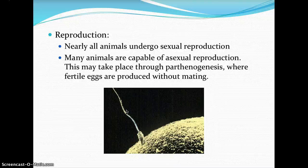Parthenogenesis is where the animal produces fertile eggs without mating. This is advantageous if there are no males around for mating — the female animal is able to lay fertilized eggs. However, this decreases genetic variability in the population because all offspring are genetic clones of the mother, and therefore will also be female. Nearly all animals do undergo sexual reproduction, but many are also capable of asexual reproduction.